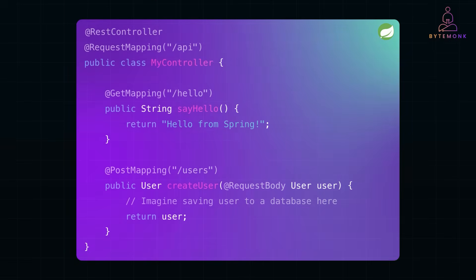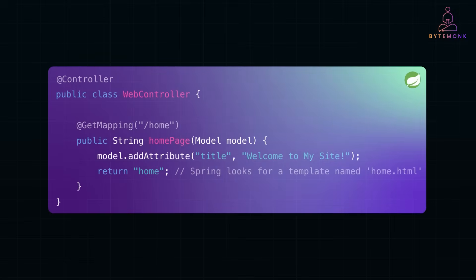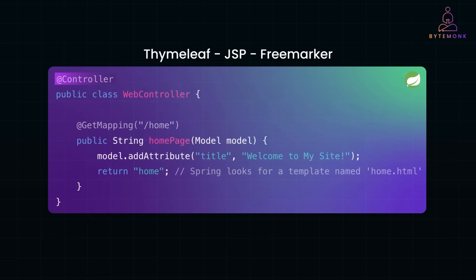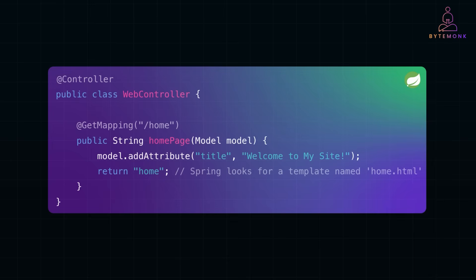Spring MVC is all about creating web apps or REST APIs with minimal hassle. @Controller is used when you want to serve up HTML views or template-based responses, while @RestController is a shorthand for @Controller plus @ResponseBody, meaning it returns data like JSON directly rather than rendering a view. @RequestMapping and its variants like @GetMapping and @PostMapping help map URLs to your controller methods. Spring uses an HTML template engine like Thymeleaf, JSP, or FreeMarker to render dynamic pages with the traditional @Controller approach. Using Spring MVC means you can whip out RESTful APIs or full-blown web apps quickly, with annotations making it crystal clear what each piece of your application is supposed to do.